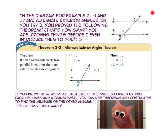In the diagram for Example 2, angle 1 and angle 7 are alternate exterior angles. In You Try number 2, you proved the Alternate Exterior Angles Theorem before it was even shown to you. If a transversal intersects two parallel lines, then alternate exterior angles are congruent. Since angle 1 and angle 7 are alternate exterior angles, they are congruent.